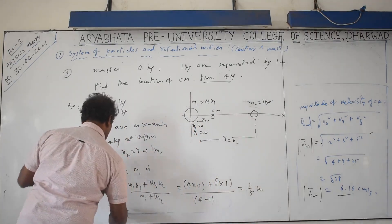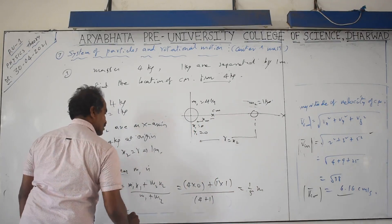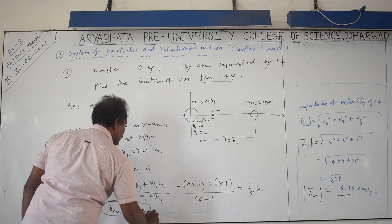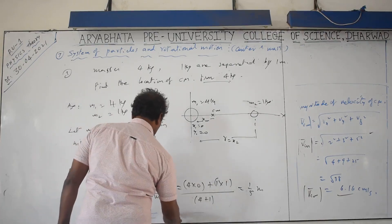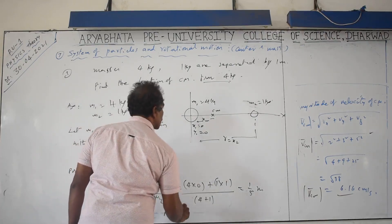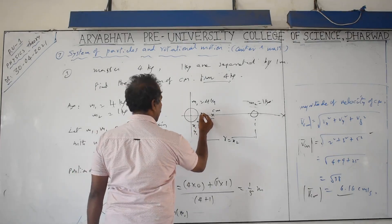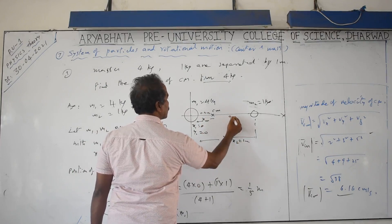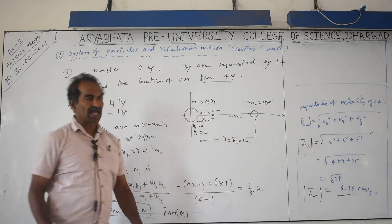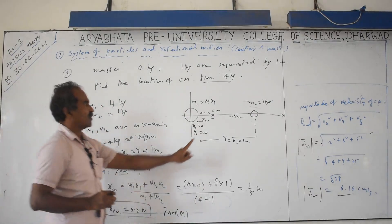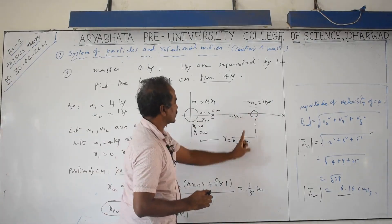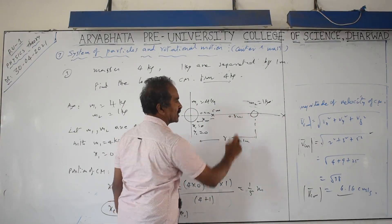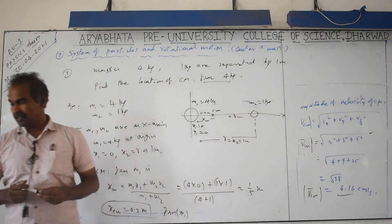The center of mass is 0.2 meters from the 4 kg mass. Since the total separation is 1 meter, the remaining distance is 0.8 meters. If you are asked for the distance from the 1 kg mass, the answer is 0.8 meters or 80 centimeters.